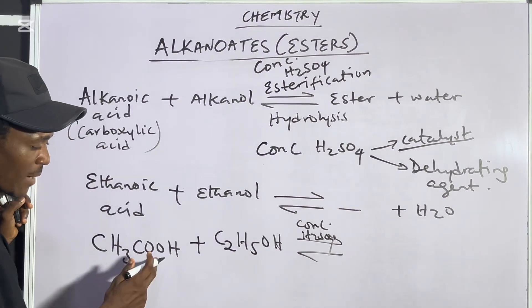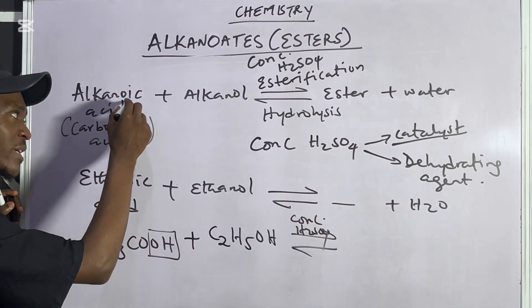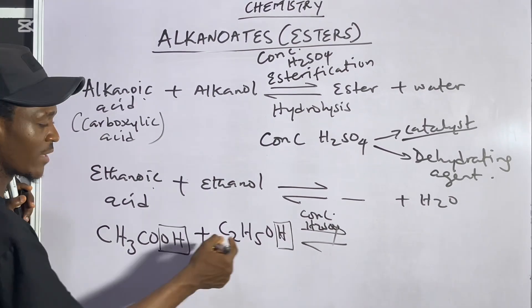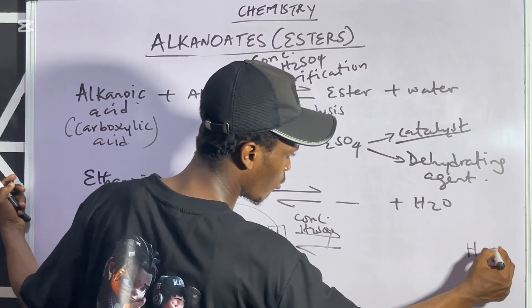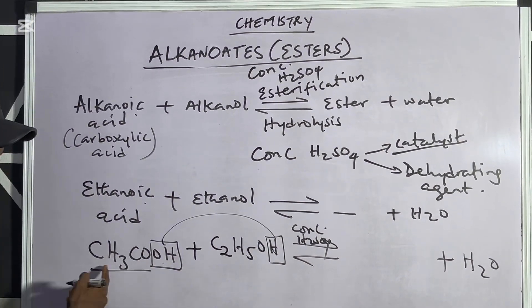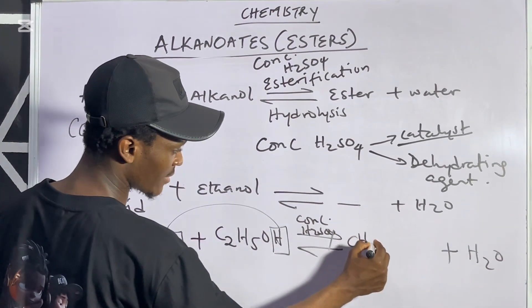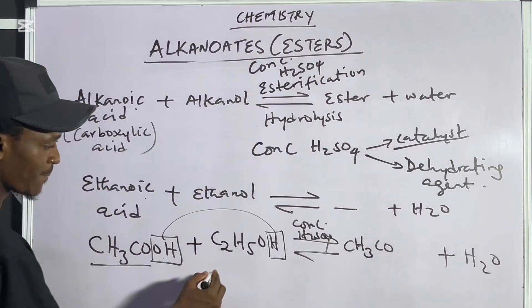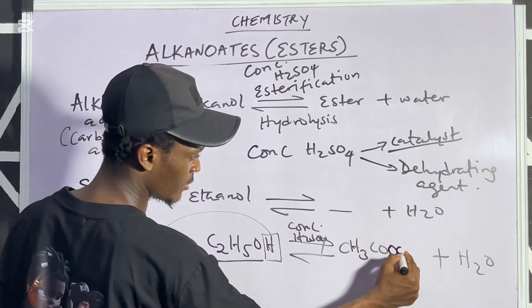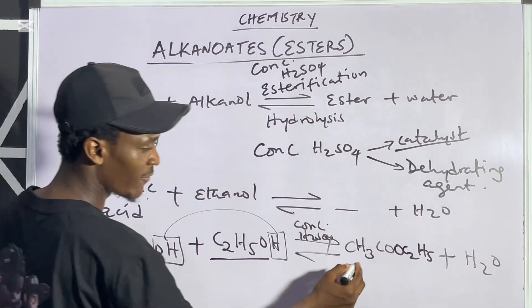Both compounds possess OH groups. To form water, you take the OH from the alkanoic acid (ethanoic acid) and the H from the alkanol (ethanol). Combining them gives H₂O. You are left with CH₃CO from ethanoic acid. Write CH₃CO first, then bring the oxygen in front of the remaining C₂H₅, giving OC₂H₅. So the ester formed is CH₃COOC₂H₅.